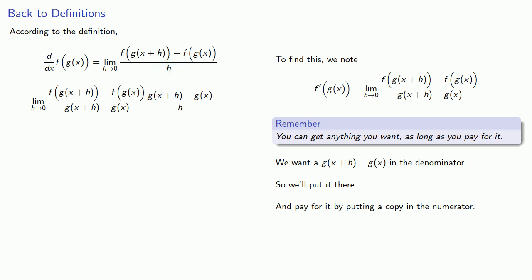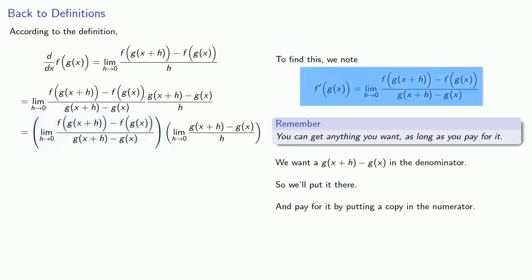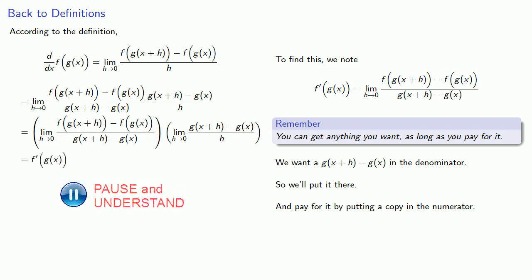And now we have a limit of a product, which we can rewrite as the product of the limits. This first limit is what we found as the derivative of f at g of x, no prime. And the other factor, well that's straight out of the definition of the derivative of g of x.